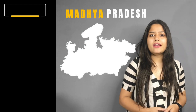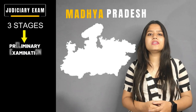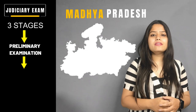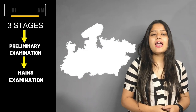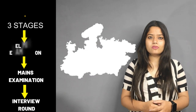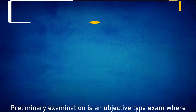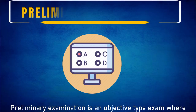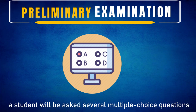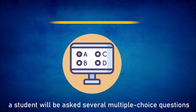Now talking about the MP Judiciary exam, this exam is basically divided into 3 stages: your Preliminary examination, Mains examination, and an Interview round. The Preliminary examination is an objective type exam where a student will be asked several multiple choice questions.